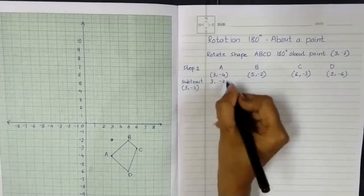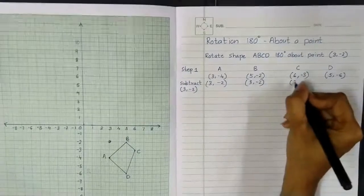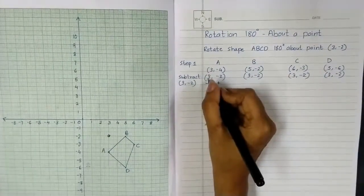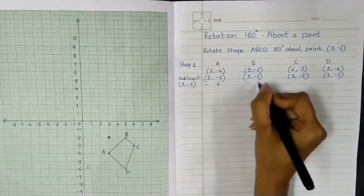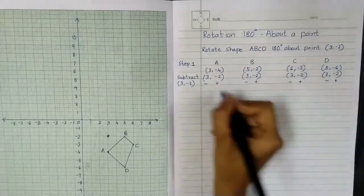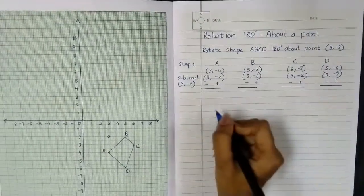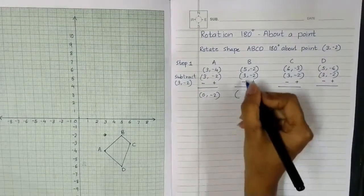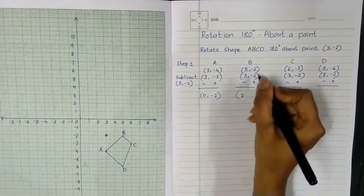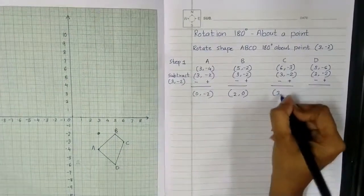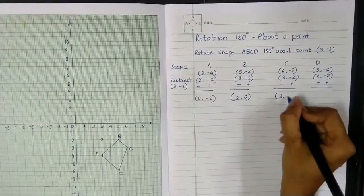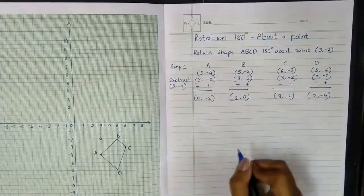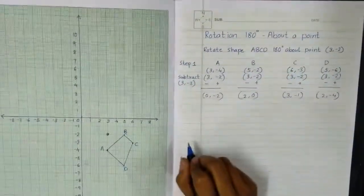While subtracting, I write down the point everywhere that I have to subtract, and I change the sign — so positive 3 turns negative and negative 2 turns positive. After applying that everywhere, I work out the final coordinates: 3 minus 3 is 0, -4 plus 2 is -2; 5 minus 3 is 2, -2 plus 2 is 0; 6 minus 3 is 3, -3 plus 2 is -1; 5 minus 3 is 2, -6 plus 2 is -4. These are my points after subtraction.